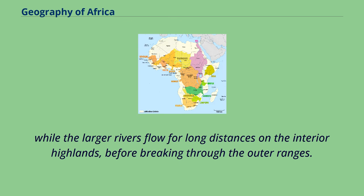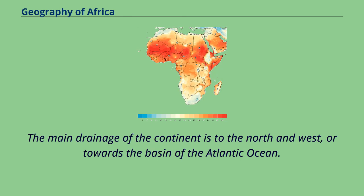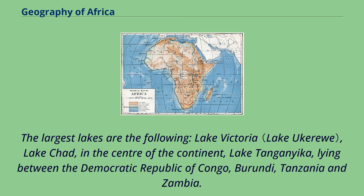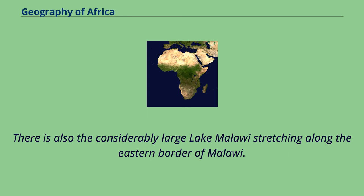While the larger rivers flow for long distances on the interior highlands before breaking through the outer ranges, the main drainage of the continent is to the north and west, or towards the basin of the Atlantic Ocean. The main African rivers are the Nile, Congo and the Niger, which flows half of its length through arid areas. The largest lakes are Lake Victoria, Lake Chad in the center of the continent, Lake Tanganyika lying between the Democratic Republic of Congo, Burundi, Tanzania and Zambia, and the considerably large Lake Malawi stretching along the eastern border of Malawi.